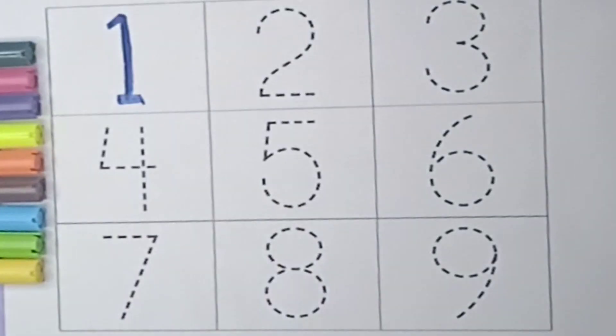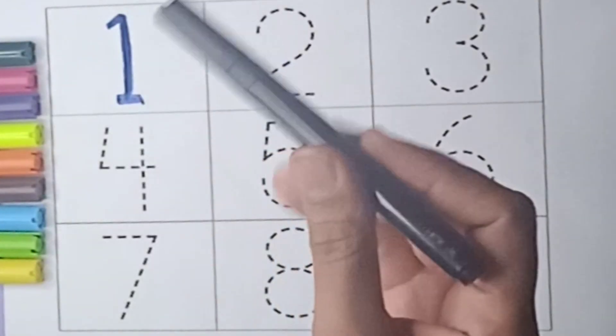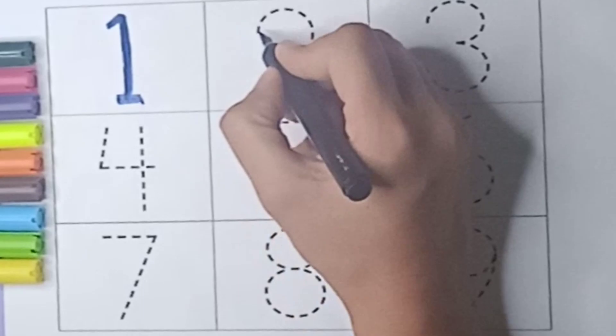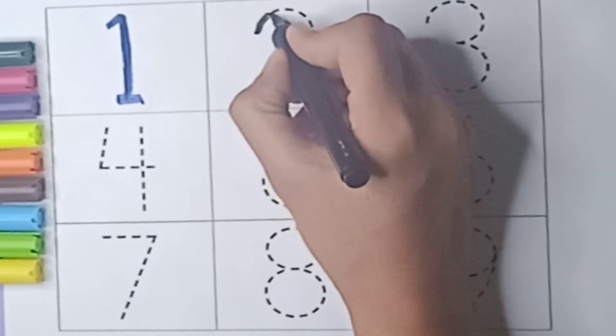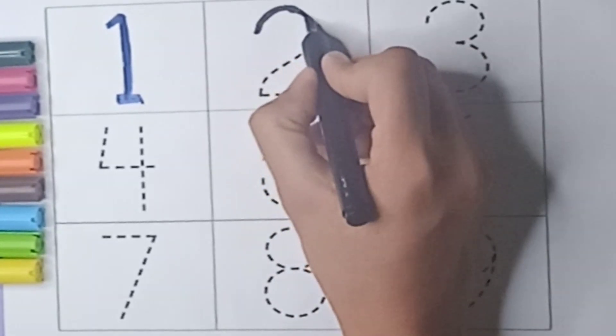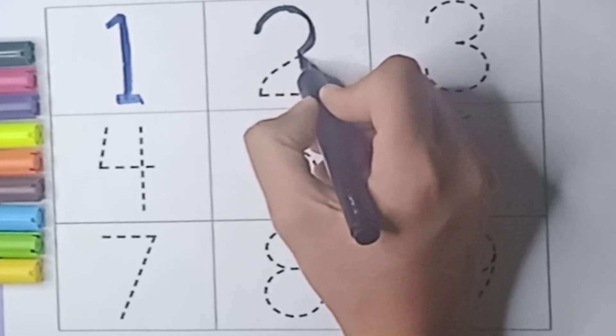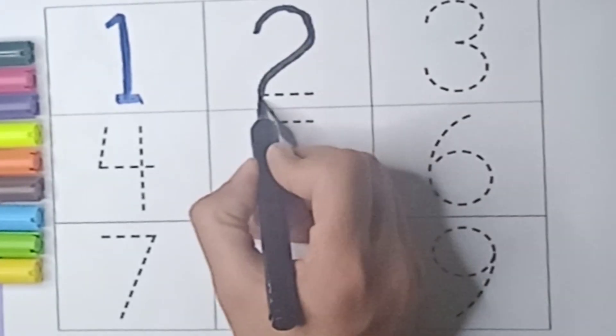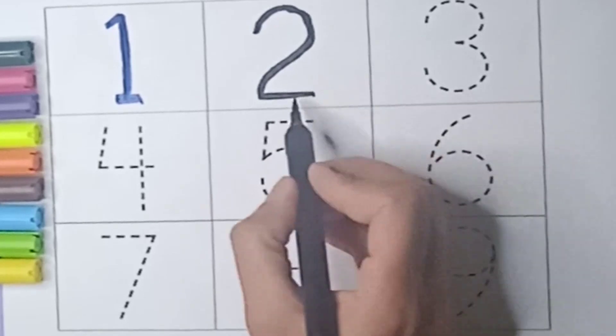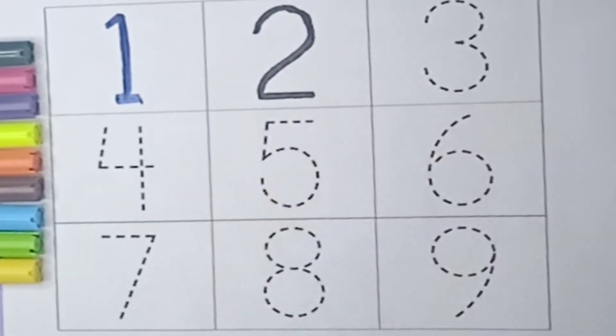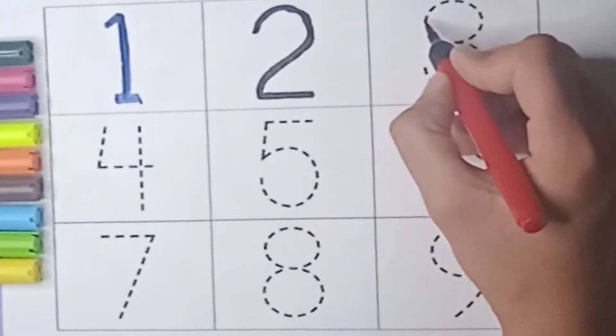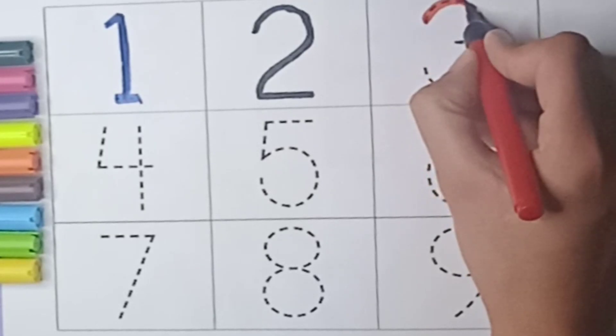Next number is 2. How do we write it? It's a black color. First we will make a curve, curve, and now sleeping line. 2. Say 2.